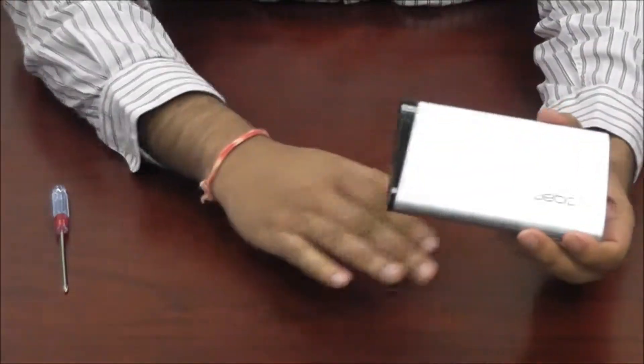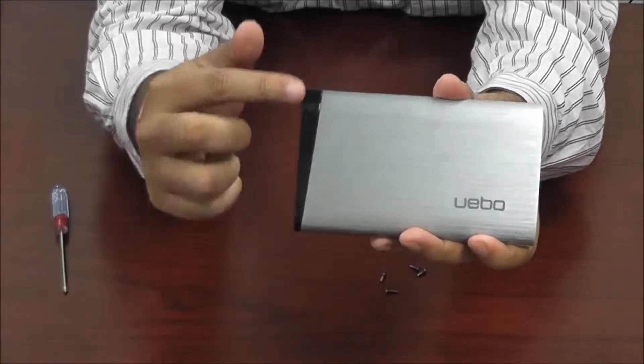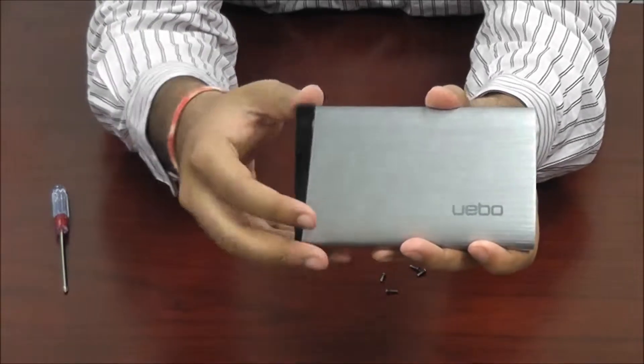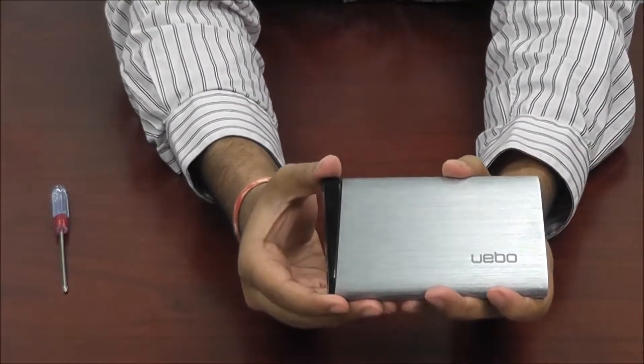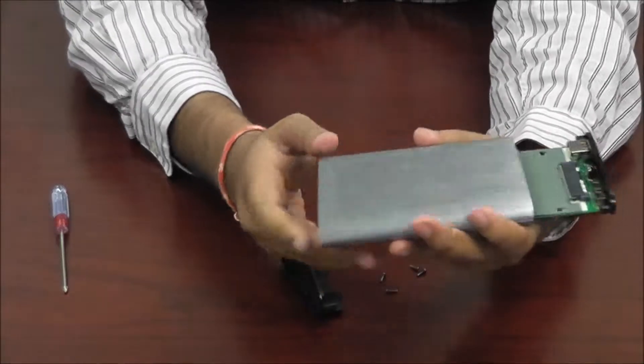Okay so now that you got all the screws unscrewed you see this black back panel right here. It's the first thing you're gonna have to remove and so it comes out really quickly and easily.